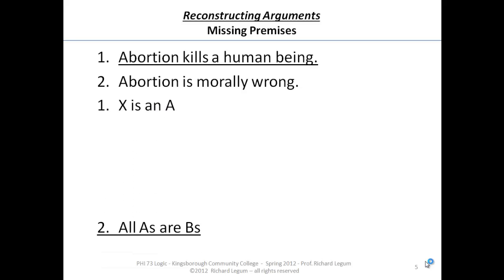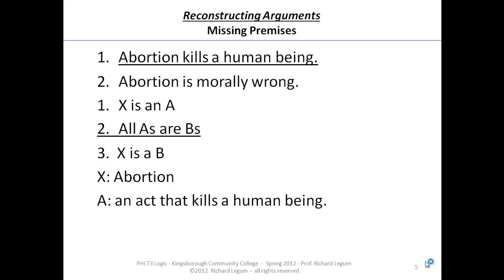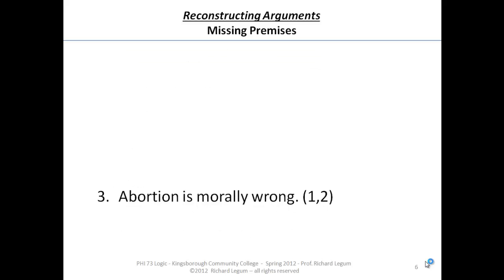Namely, maybe it's a predicate logic inference — our basic direct reasoning in predicate logic: X is an A, all A's are B's, therefore X is a B. So if we fill it in: abortion is an act that kills human beings; all acts that kill human beings are acts that are morally wrong; so abortion is morally wrong.